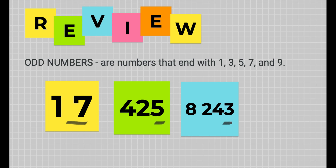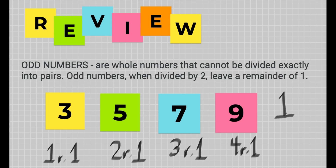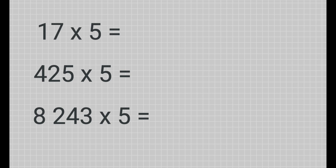Now let's try our examples. Let's try 17 times 5. If you want to do the shortcut way, since 17 is an odd number, all you need to do is subtract 1 from 17, and that gives you 16. Now after that, get the half of 16, and that is 8.